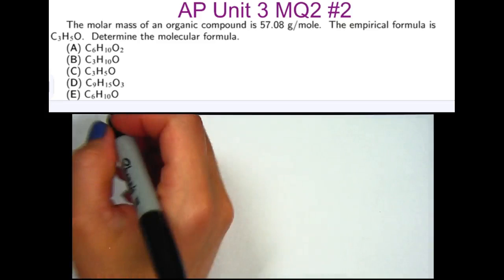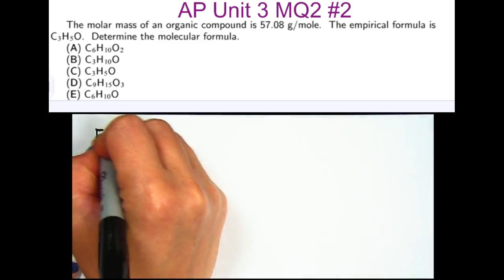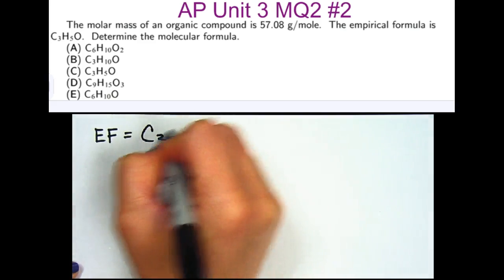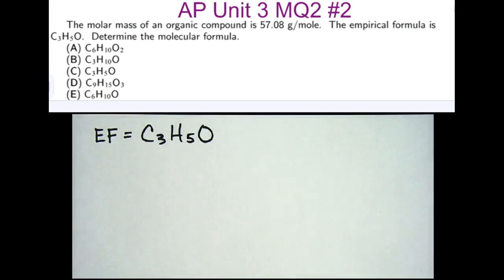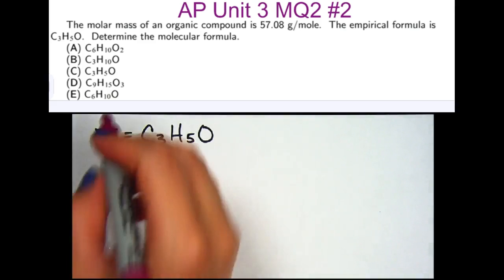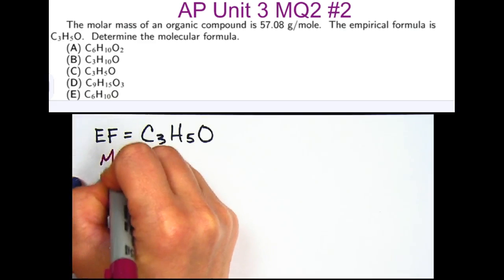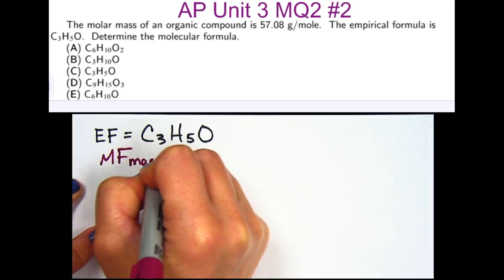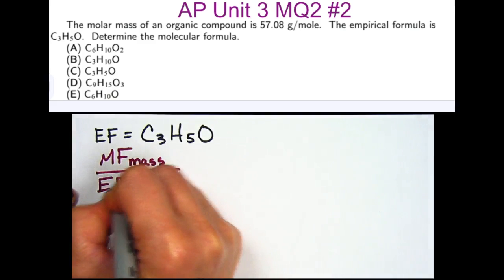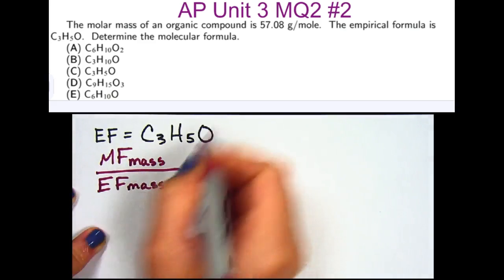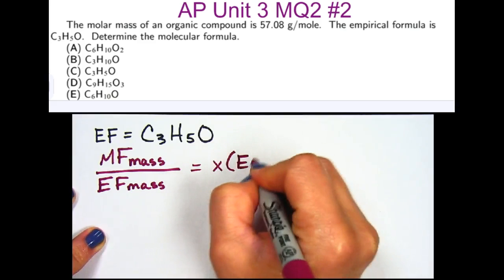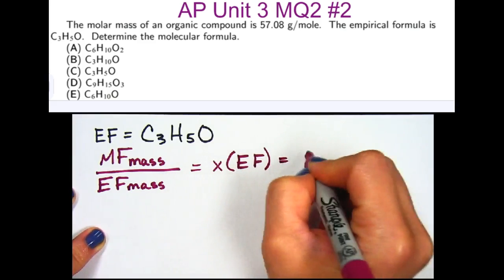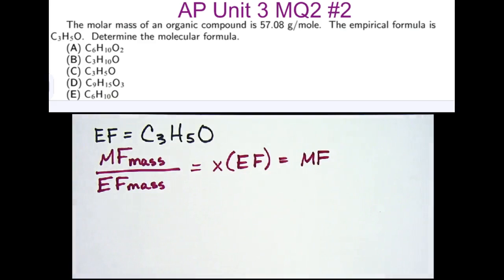We're told that the empirical formula is C3H5O. We're being asked to determine the molecular formula. In order to do that, we have to take the molecular formula mass and divide it by the empirical formula mass, which is going to give us an integer that we then multiply across the empirical formula, and that will give us the molecular formula.